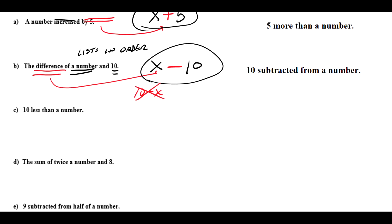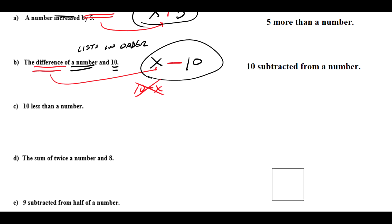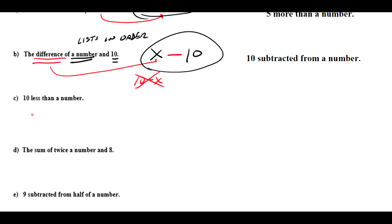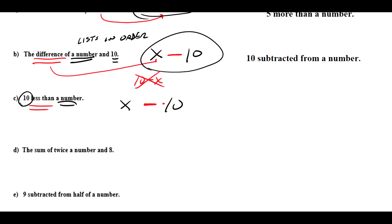Let's try another one: '10 less than a number.' We recognize 'less than' as subtraction. But it's 10 less than a number, so the number comes first and 10 comes second — we're subtracting 10 from the number. That gives us x − 10, the meaning of this expression.